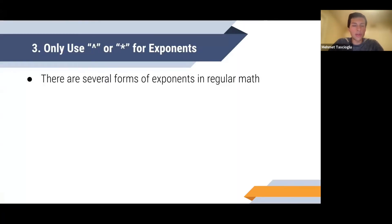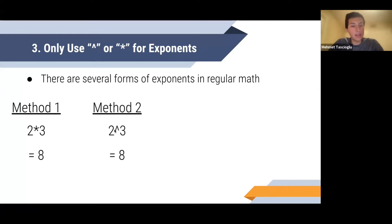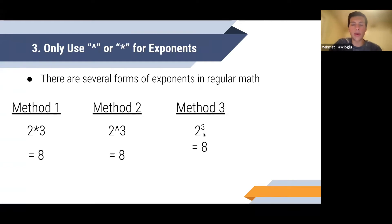Next: only use the power symbol for exponents — either the caret (^) or the star (*). There are several forms of exponents allowable in regular math, but only certain symbols are allowed in equations. Method one: two star three equals eight — as mentioned on the multiplication slide, the star means power, so two*3 means two to the power of three. Method two: two caret three equals eight, where the caret represents power. You can also write the three as a superscript in the upper right corner, which represents a power in regular math.